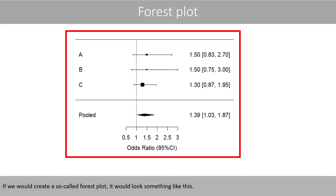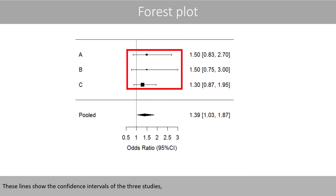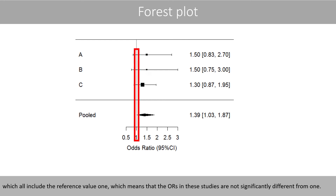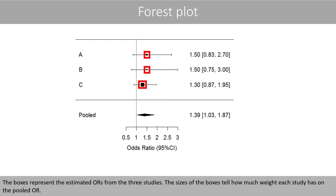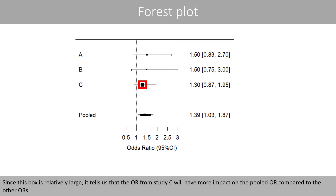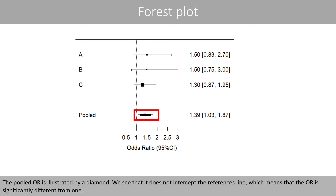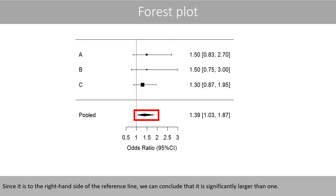In a forest plot, lines show the confidence intervals of the three studies, all including the reference value 1, meaning their odds ratios are not significantly different from 1. The boxes represent the estimated odds ratios, and their sizes indicate how much weight each study has on the pooled odds ratio — the larger box for study C shows it has the most impact. The pooled odds ratio is illustrated by a diamond, which does not intercept the reference line, confirming it is significantly larger than 1.